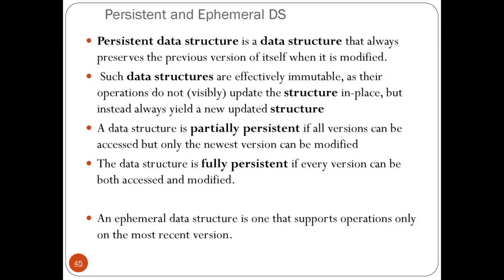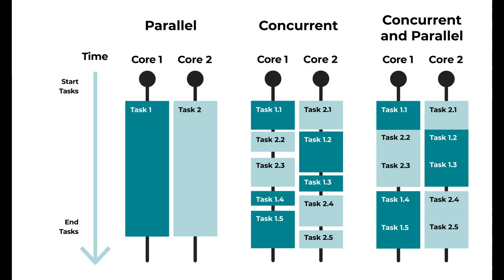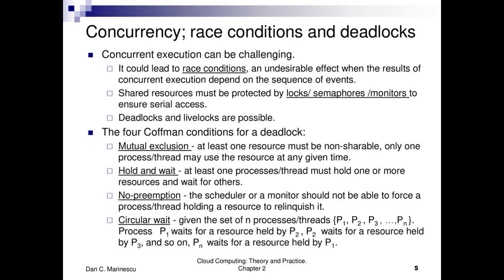The next innovation in functional programming history to impact security is the invention of persistent and immutable data structures, also known as purely functional data structures. These have proven to be excellent techniques for storing and retrieving data when handling concurrency and parallelism. In concurrency, the computer task-switches between activities executed as threads, while in parallelism, tasks are divided amongst several CPU cores to speed up execution. A common problem with both is that data can be easily corrupted by different threads.